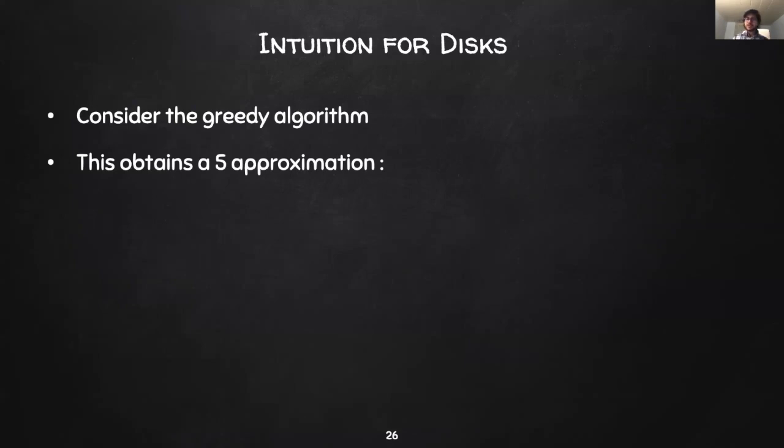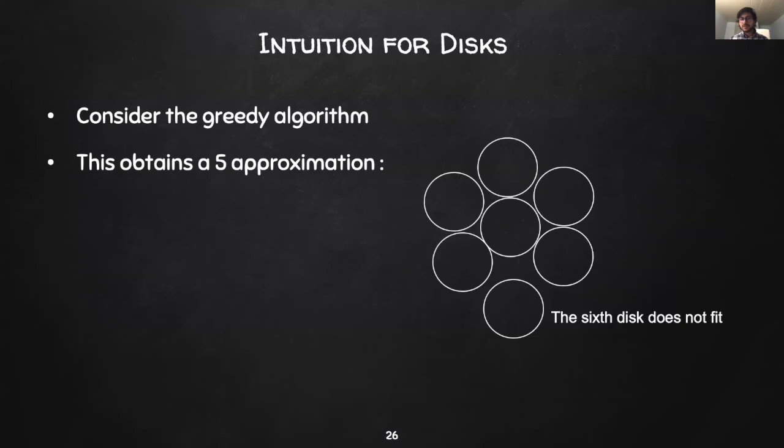Okay, we now switch gears a bit and consider the MIS problem for unit-weight disks. For intuition, we begin by analyzing the greedy algorithm for insertion-only streams. We observe that the greedy algorithm yields a 5 approximation in insertion-only streams. To see this, we note that the 5 disks on the circumference are mutually disjoint but intersect the disk in the middle. However, a 6th such disk does not fit. It is easy to see that this yields a 5 approximation in insertion-only streams, while such a greedy algorithm would not work in turnstile streams.